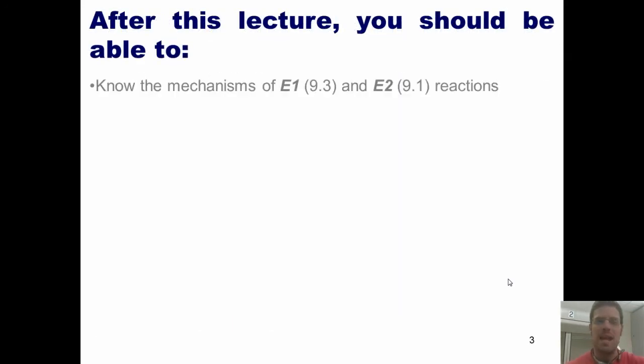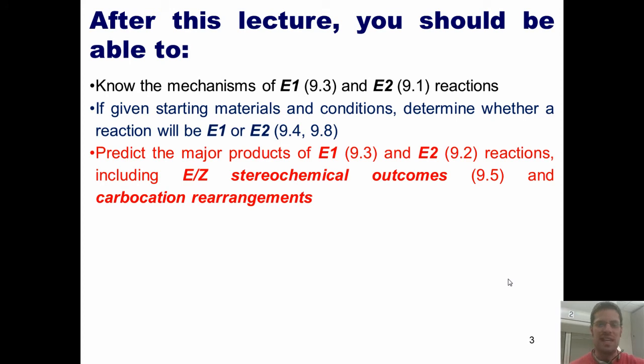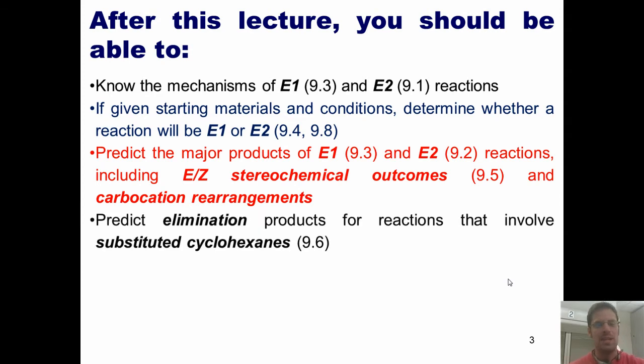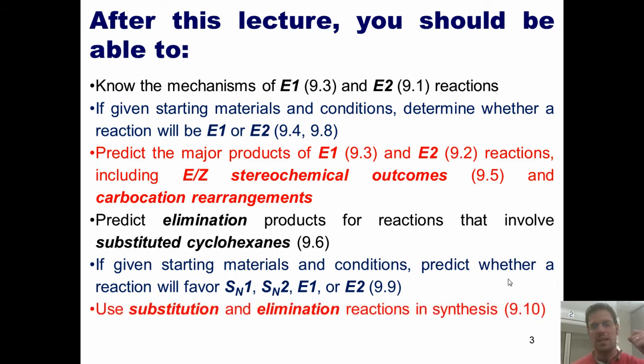So after today's lecture, you should be able to know the mechanisms of E1 and E2 reactions, determine whether a reaction will be E1 or E2 given starting materials and conditions, predict the major products of E1 and E2 reactions including E/Z stereochemical outcomes and carbocation rearrangements, predict elimination products for reactions that involve substituted cyclohexanes, predict whether a reaction will favor SN1, SN2, E1, or E2, and use substitution and elimination reactions in synthesis. Please note we will skip section 9.7 from our text, and that each of these topics are discussed in the sections written here.